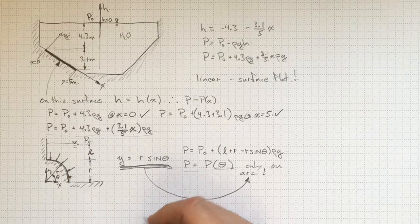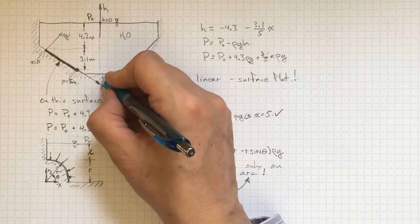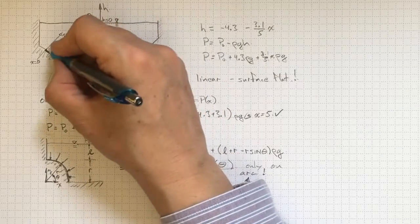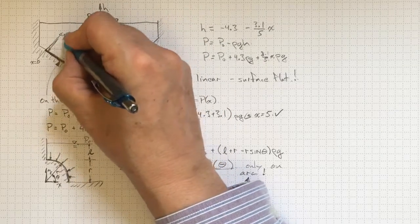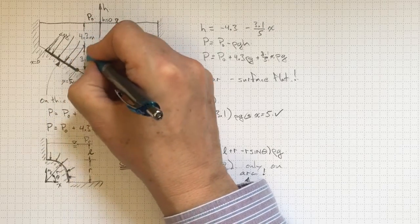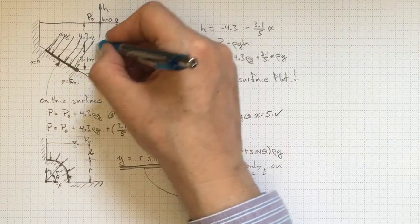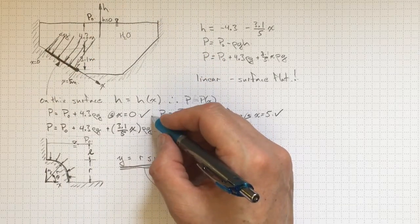So first thing that's important, be able to find out the pressure at a particular point. Next thing that's important, be able to figure out how the pressure varies as you are moving over a defined region in space. So the pressure here is increasing as we go down along that gate.